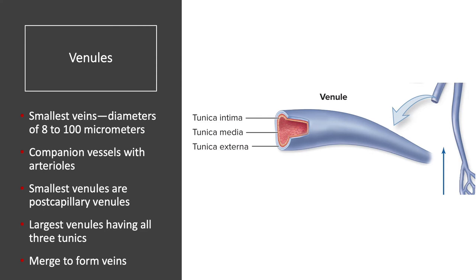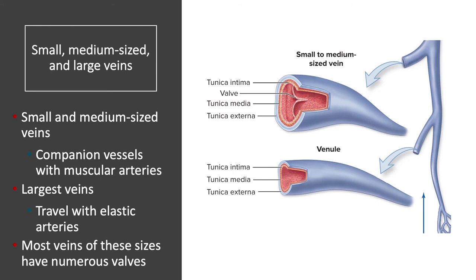First up, we have venules — the smallest of the veins — with diameters ranging from 8 to 100 micrometers (100 micrometers being the thickness of a piece of paper). They are the companion vessels to the arterioles. The smallest venules are the post-capillary venules that drain the capillaries, while the largest venules have all three tunics and merge to form veins. A venule transitions to a true vein at greater than 100 micrometers.